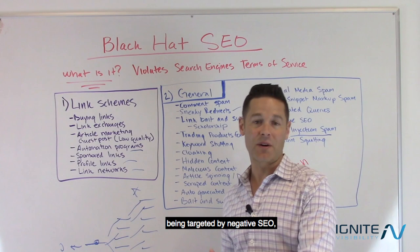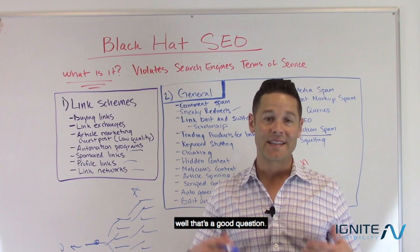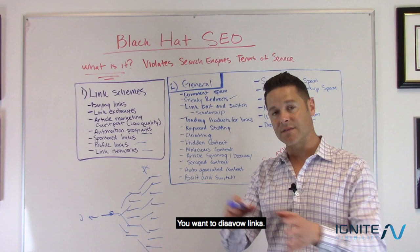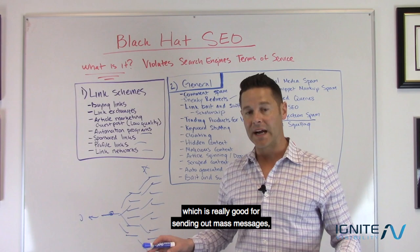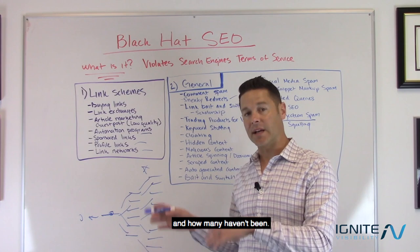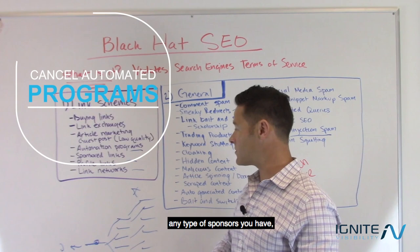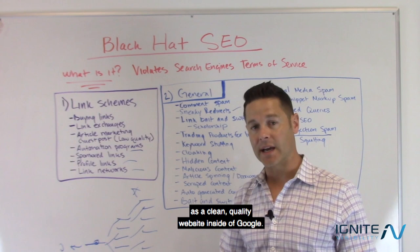So what do you do if you're being targeted by negative SEO or you've done Black Hat SEO and want to get your website back in good standing? For link schemes, that goes through disavow files in Google Search Console — you want to disavow and block those links. You'll need to go back and remove a lot of them. There's a tool called Remover which is good for sending out mass messages and tracking which links have been taken down. You'll also need to cancel any automated programs, delete any profile links, and get out of any link networks.